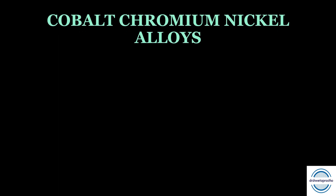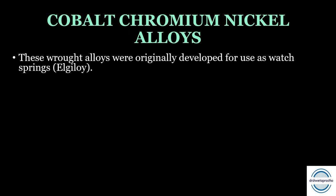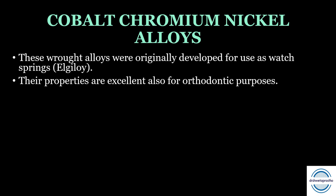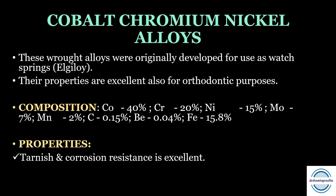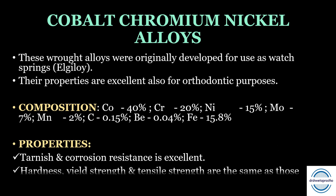The second wrought base metal alloys are the cobalt-chromium-nickel alloys. These wrought alloys were originally developed for use as watch springs and were called elgiloy alloy. Their excellent properties make them suitable for orthodontic purposes. The composition includes cobalt 40%, chromium, nickel, molybdenum, manganese, carbon, beryllium, and iron. Properties include excellent tarnish and corrosion resistance, and hardness, yield strength, and tensile strength similar to 18-8 stainless steel.